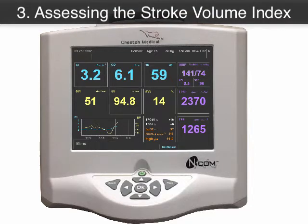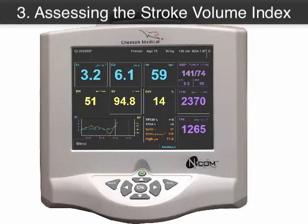The stroke volume index is perhaps the most versatile indicator of fluid responsiveness. A normal stroke volume index ranges from 33 to 47 mLs per m² per beat. A stroke volume index of less than 30 suggests that the heart is underfilled and the patient may benefit from additional fluid administration. An SVI of greater than 70 suggests the patient's heart is full and unlikely to benefit from additional fluids.